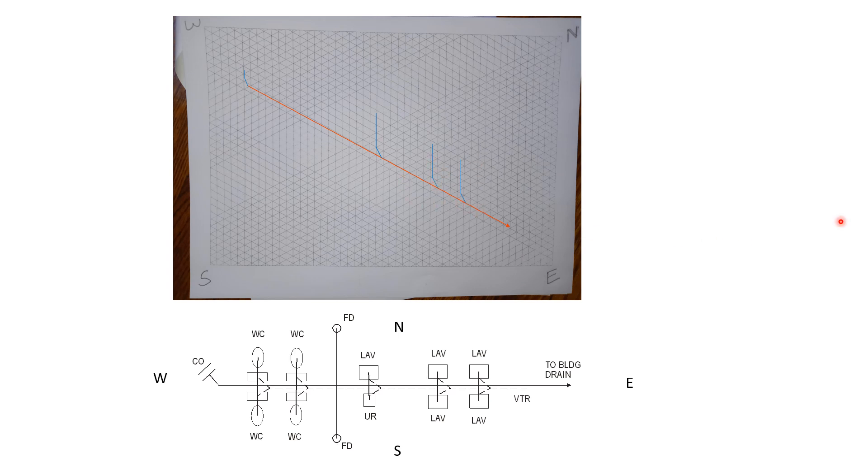So keep that in mind, vertical to horizontal is where you have to show a direction of flow and this is what you're looking at, something just like that right there.